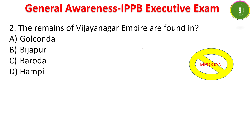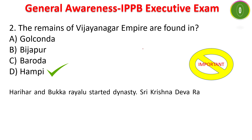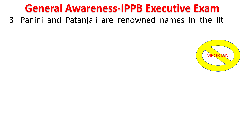Next question: the remains of the Vijayanagara Empire are found in — Golkonda, Vijapur, Baroda, or Hampi? The answer is Hampi. Regarding the Vijayanagara Empire, Harihara Raya and Bukha Raya started the dynasty. Sri Krishna Devaraya is one of the major rulers and he wrote Amuktamalyada; he is the author of Amuktamalyada.